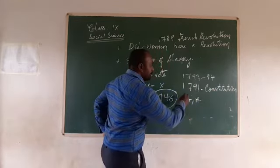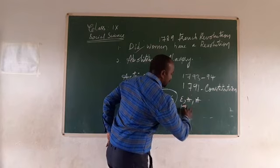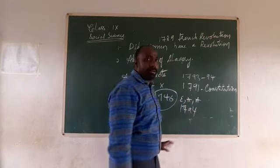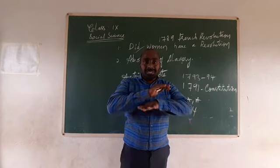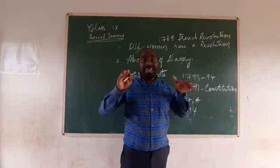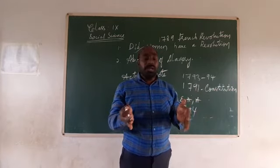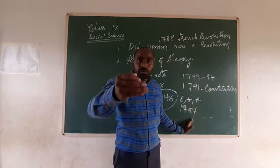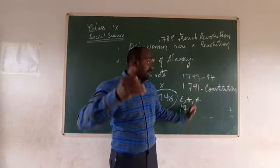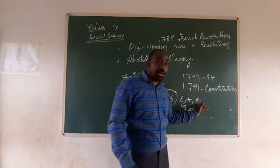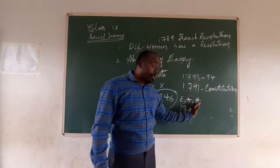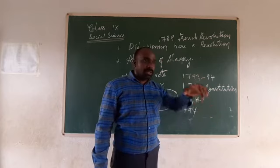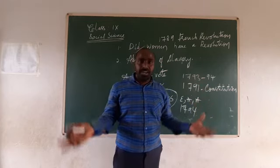In France, finally in 1794, the slave trade was completely abolished, giving independence to the people. The French colonies that were running in the Caribbean islands and in America were abolished, and the slaves were also able to enjoy independence and freedom.